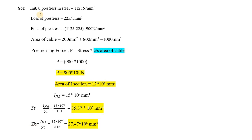I have just written the data here. Initial pre-stress in steel was 1125 Newton per mm square — that was the initial pre-stress. Loss of pre-stress: how much was the loss? That was 225 Newton per mm square. So initial minus loss will give you the final pre-stress value. If we subtract, we will get 900 Newton per mm square.